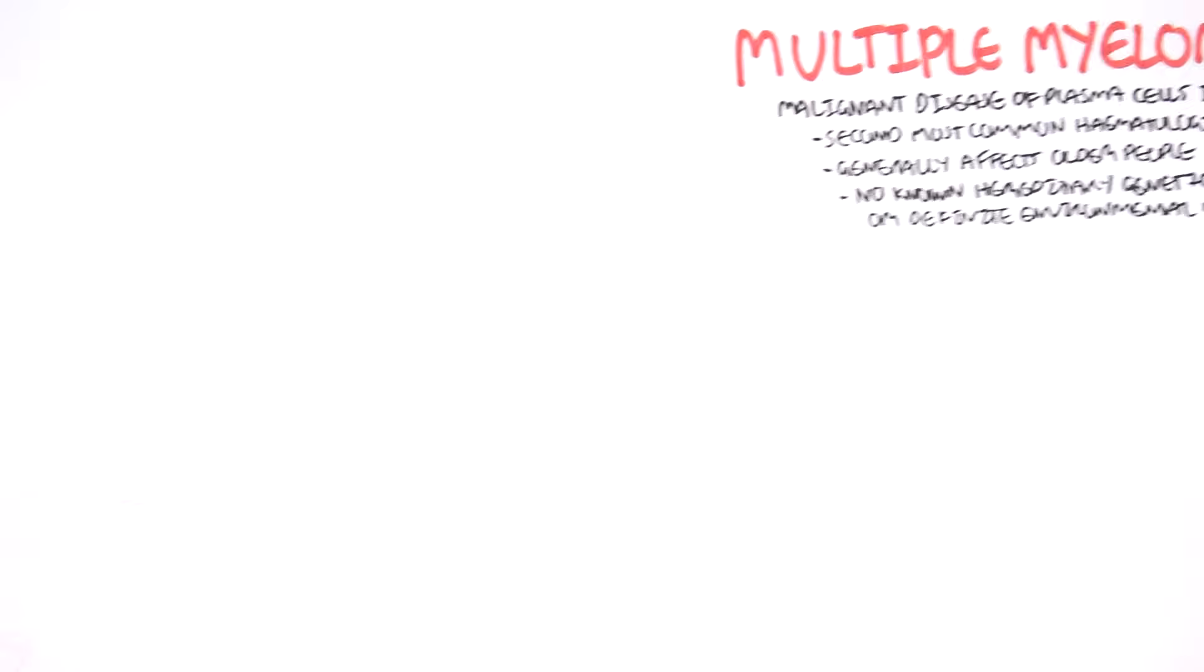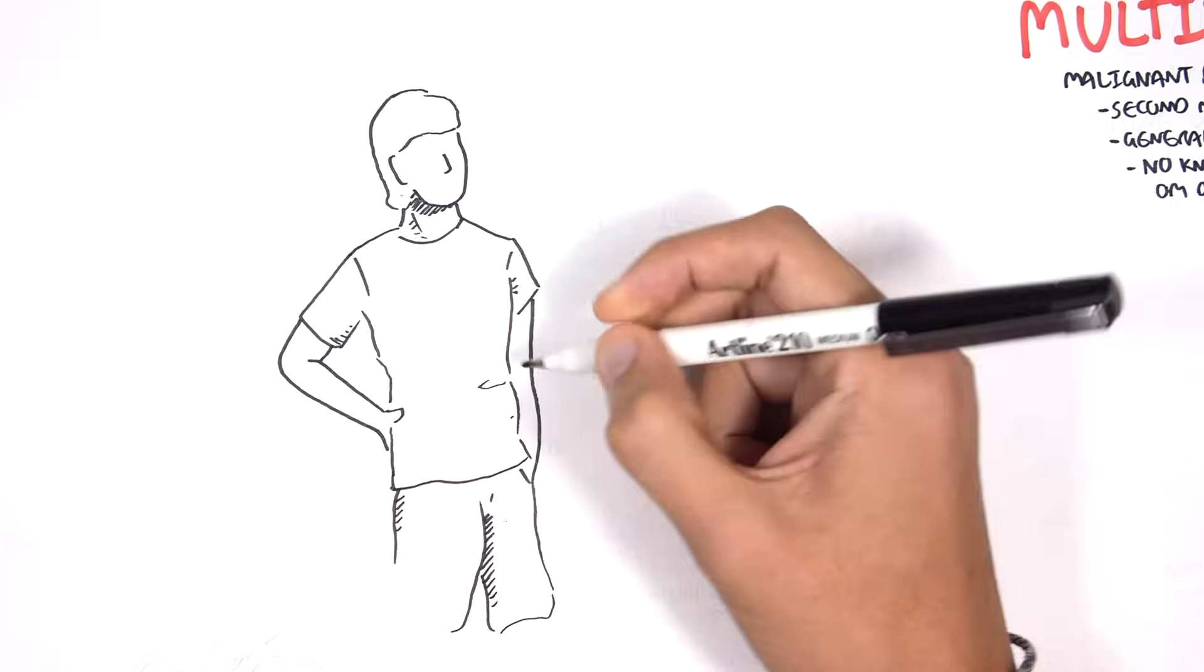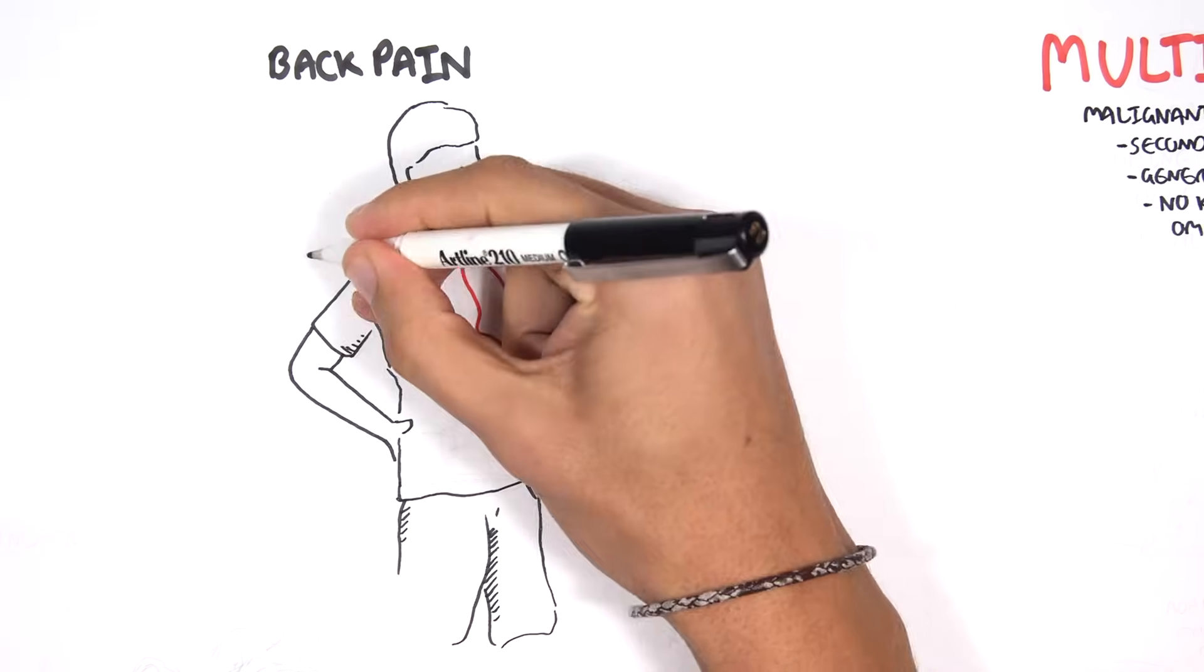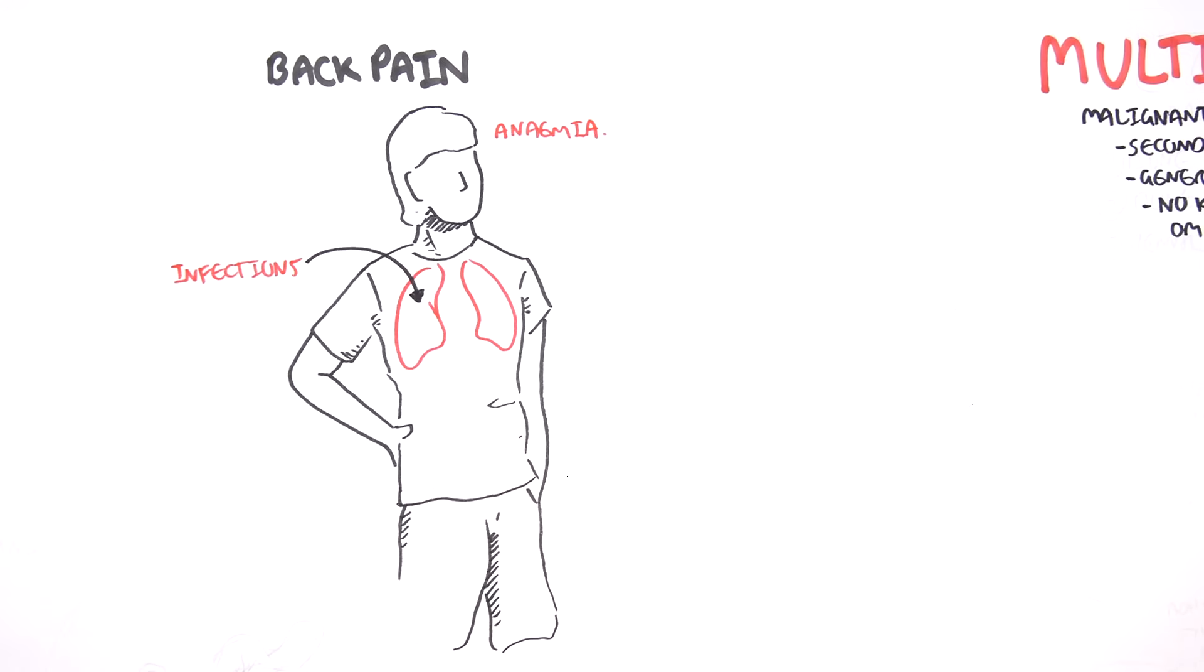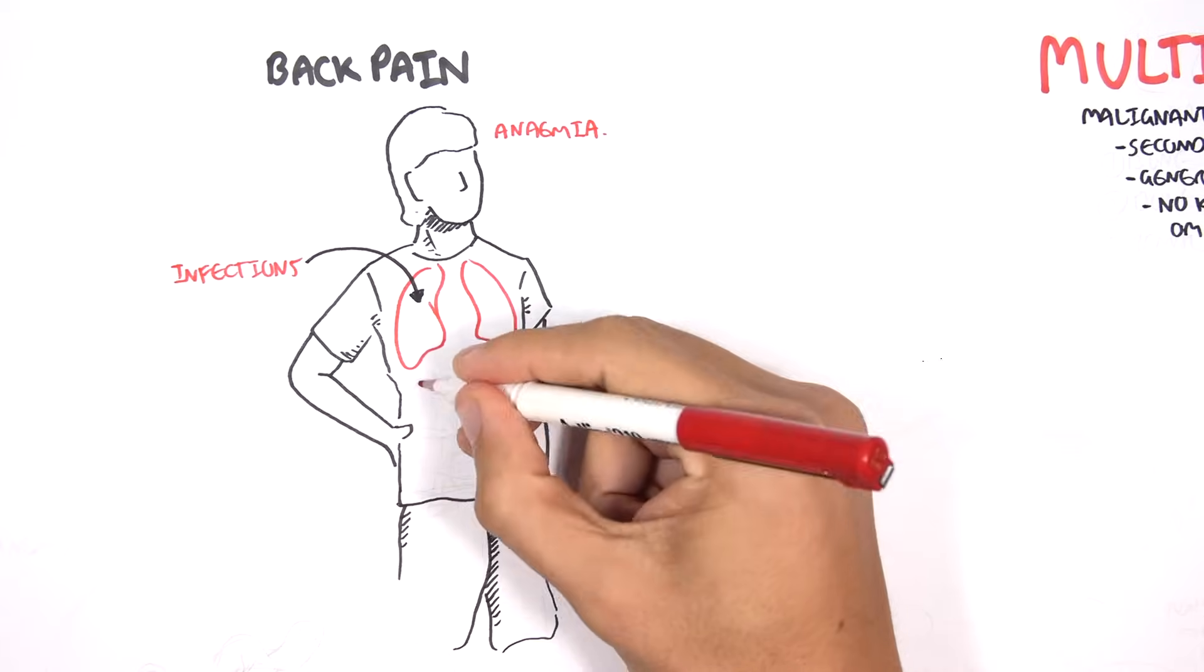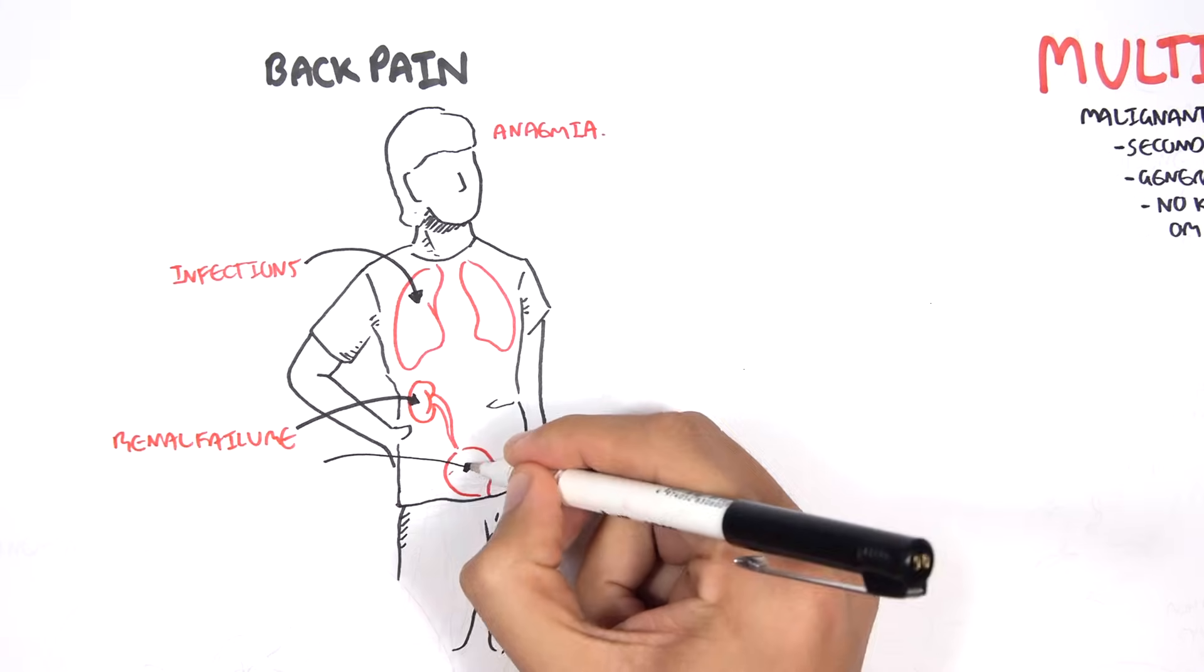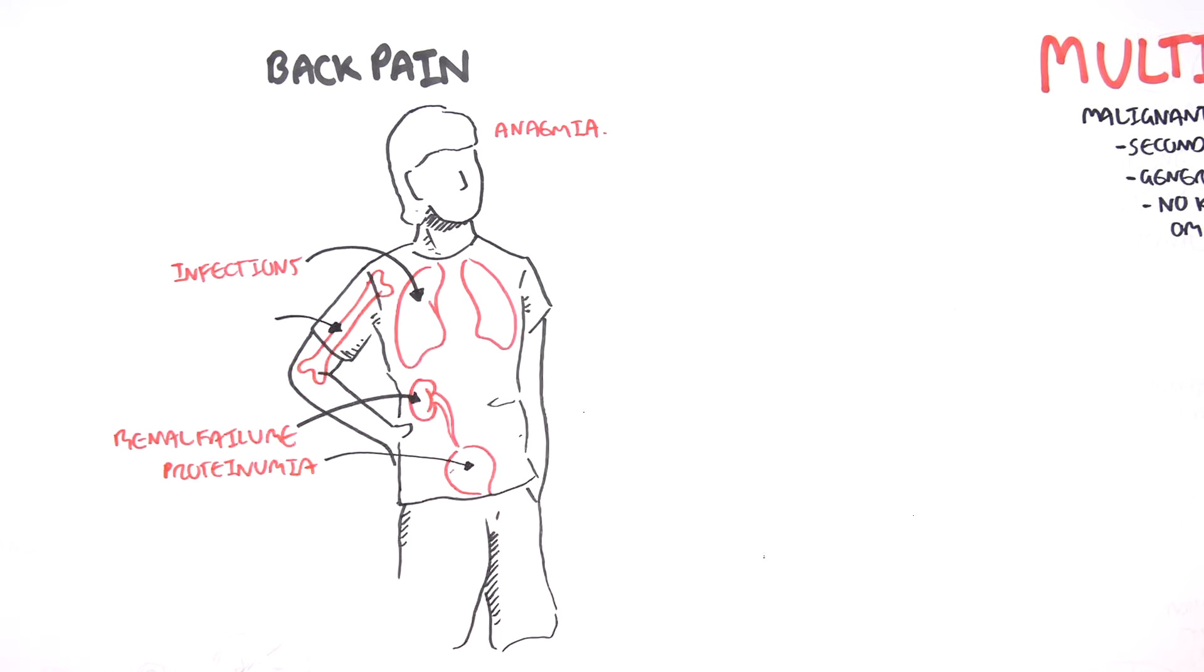Let us see what some common signs and symptoms of multiple myeloma are. Many patients present with back pain, infections of the respiratory tract, anemia which will result in tiredness and fatigue, renal failure and proteinuria. Patients with multiple myeloma also suffer from fractures and dehydration.